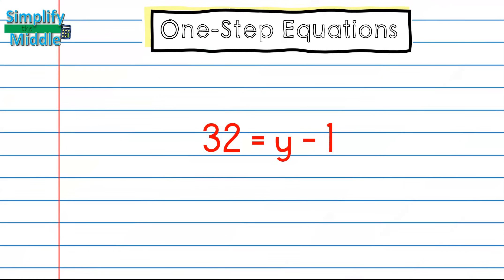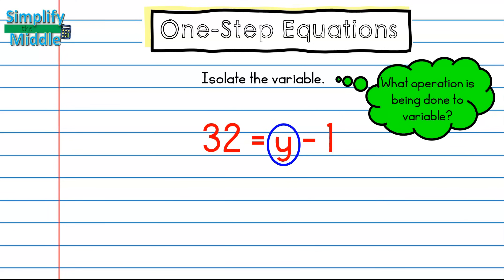My next problem, 32 equals y minus 1. I will still always be isolating my variable, and I'm going to do that by asking what operation is being done to the variable. Well, this time the variable is on this side, and the operation being done to it is subtracting by 1.